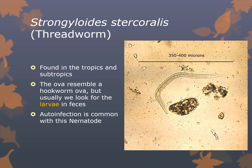Strongyloides stercoralis is also known as the threadworm, at about 380 to 400 microns in length. It differs from hookworm larvae by having a short buccal cavity, and differs from pinworm ova by having no wings near the buccal cavity. Strongyloides is found in the tropics and subtropics. The ova resemble hookworm ova, but usually what we look for in this case is larvae in feces. Autoinfection is common — larvae can develop to infective filariform stage in the human intestine and reinfect.